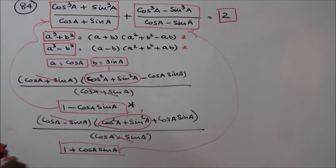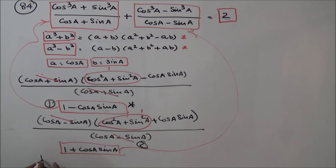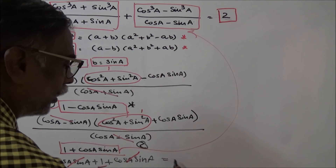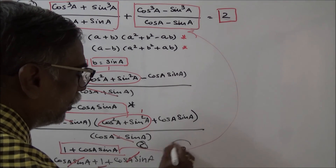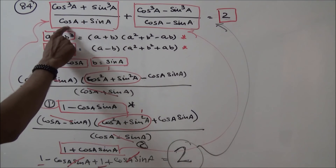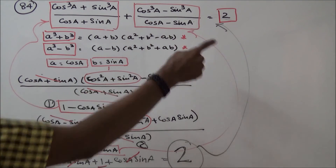Adding Part 1 and Part 2: (1 plus cosA·sinA) plus (1 minus cosA·sinA). The cosA·sinA terms cancel, and 1 plus 1 equals 2. Therefore the left-hand side equals the right-hand side, and the identity is proved.